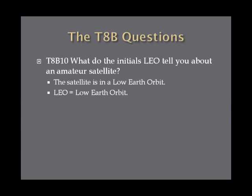What do the initials LEO tell you about an amateur satellite? LEO tells you the satellite is in a low Earth orbit. LEO — low Earth orbit.